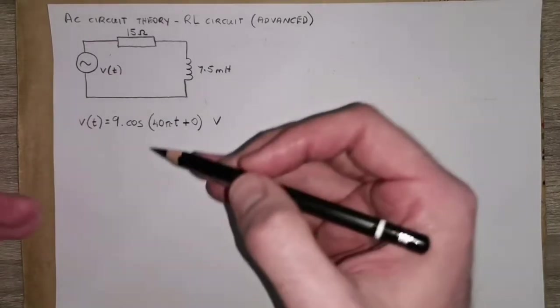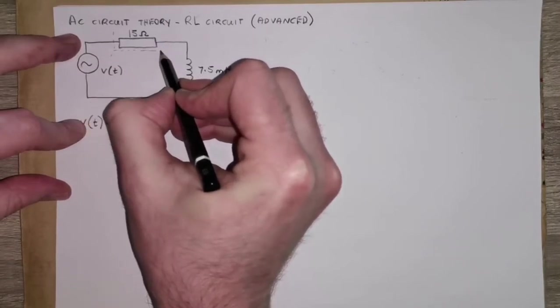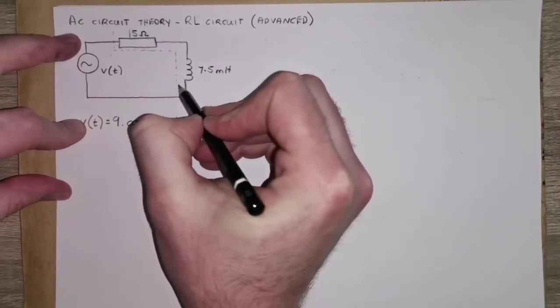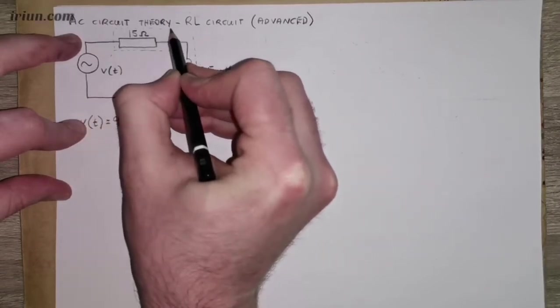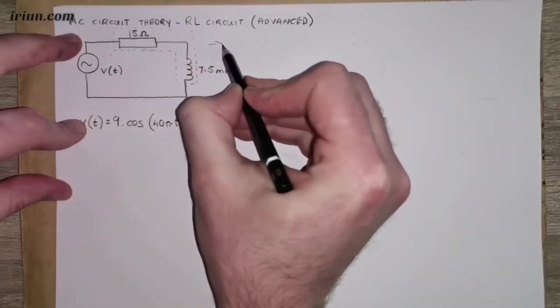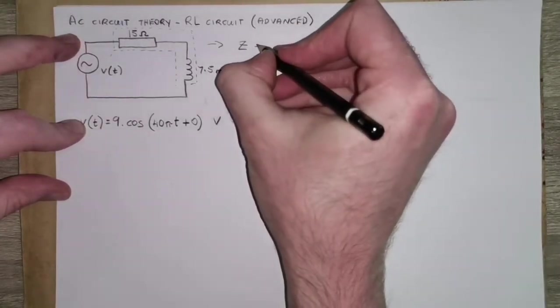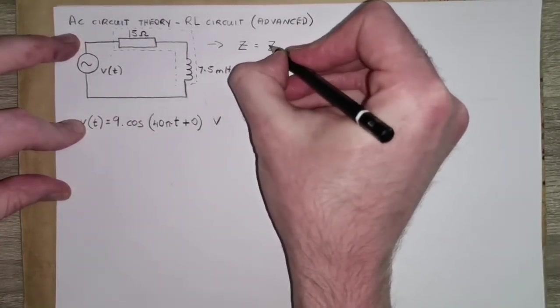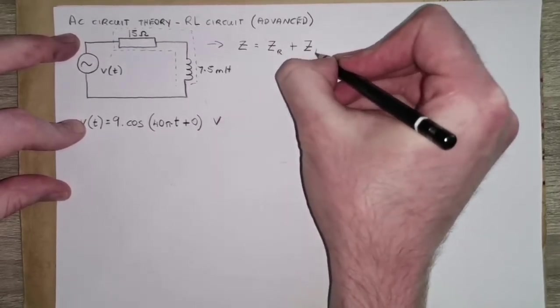And we've worked out how to calculate the equivalent impedance of that load, Z, and because they're in series it'll be the impedance of the resistor plus the impedance of the inductor.